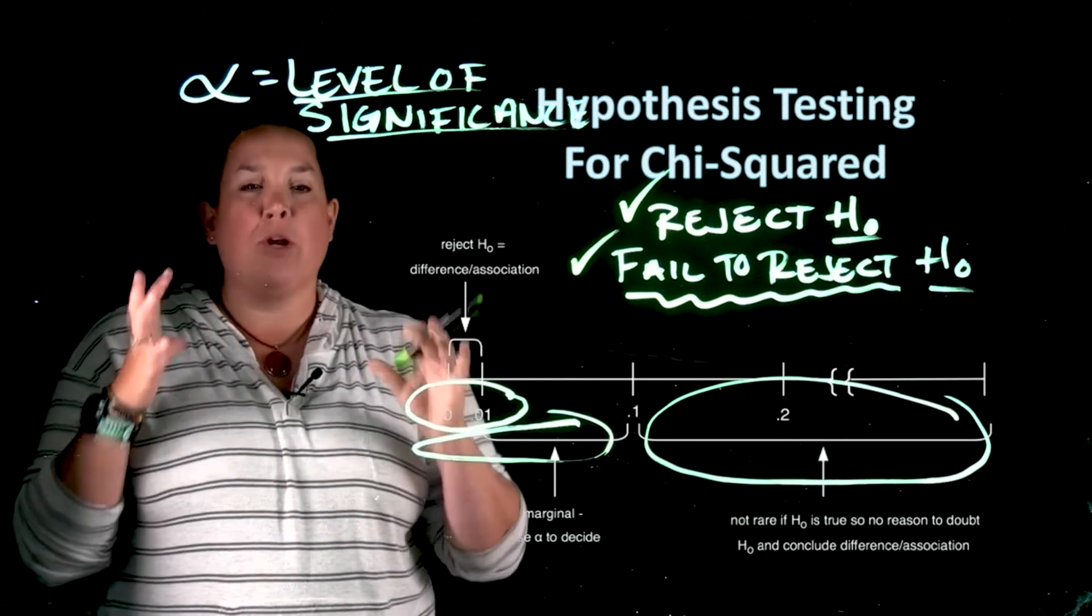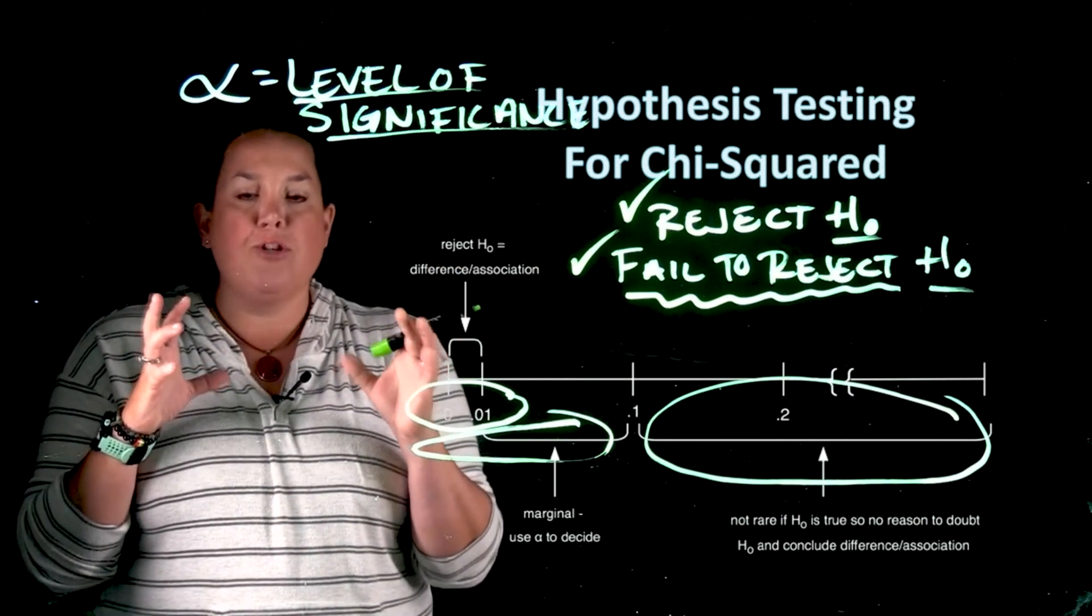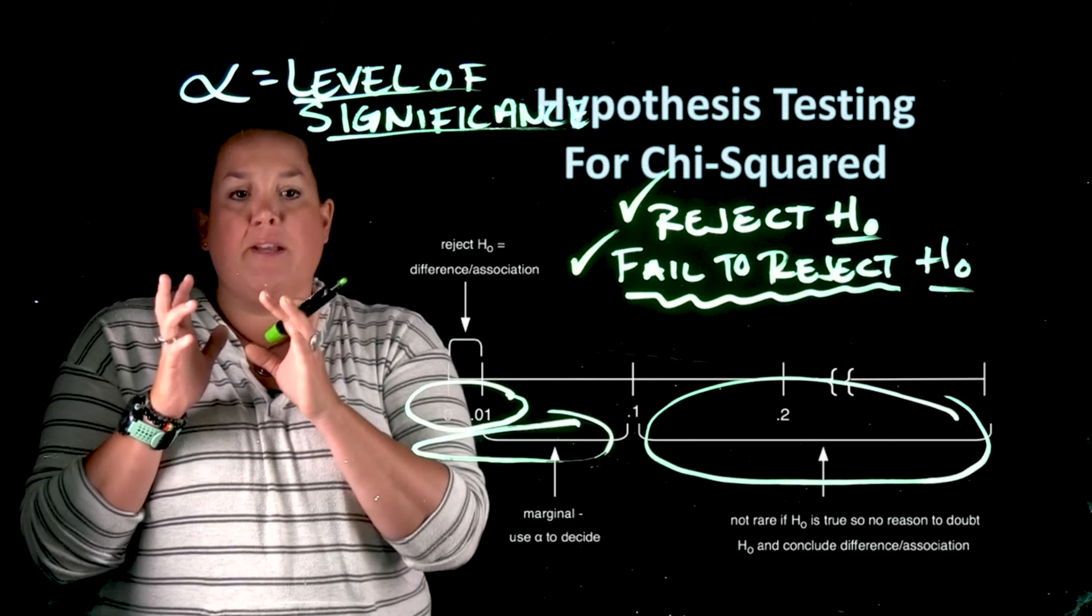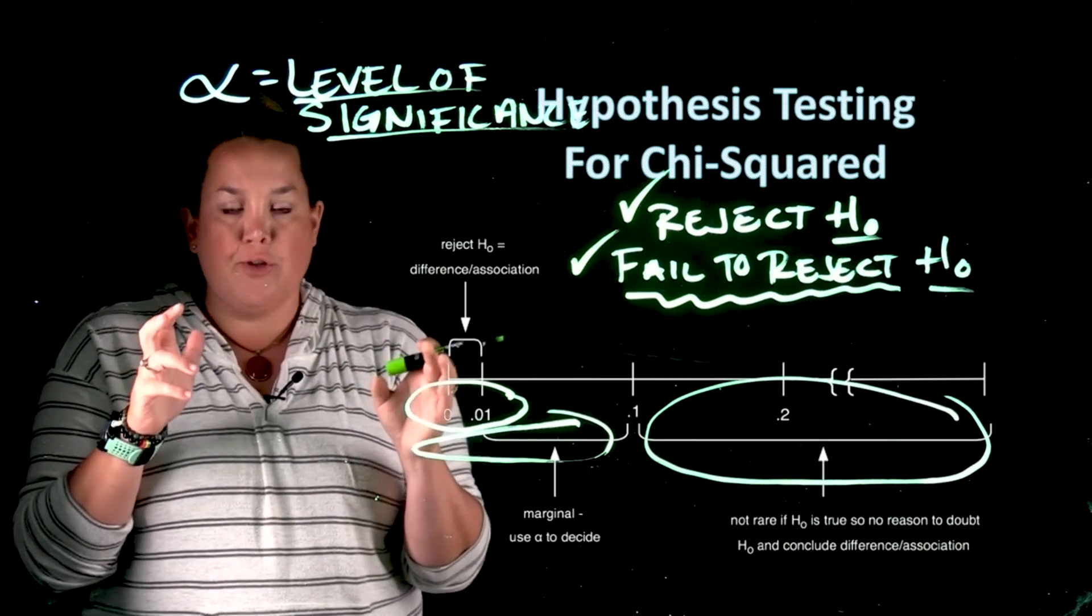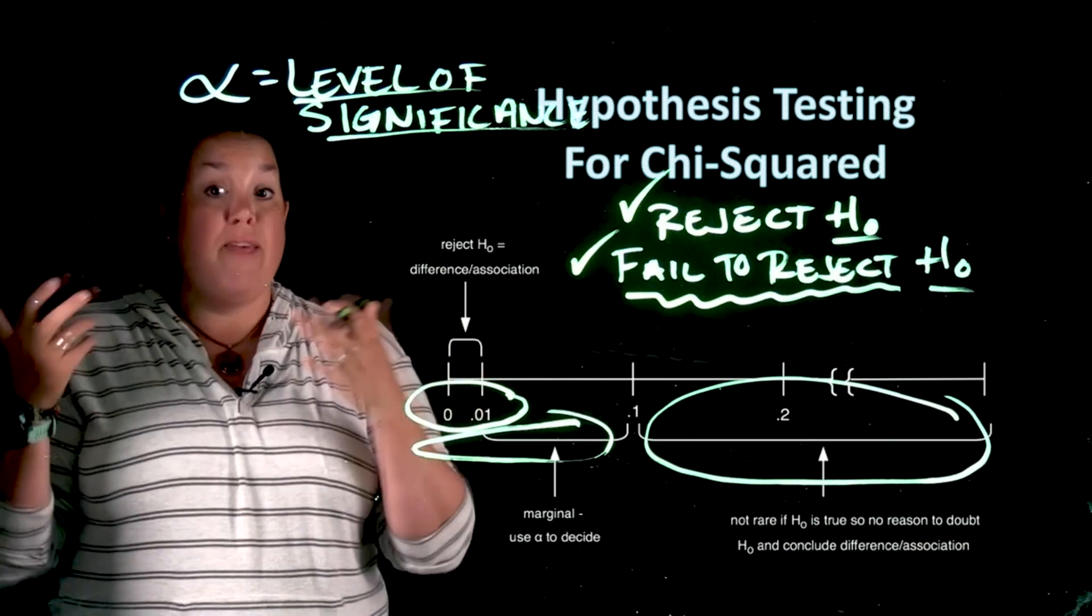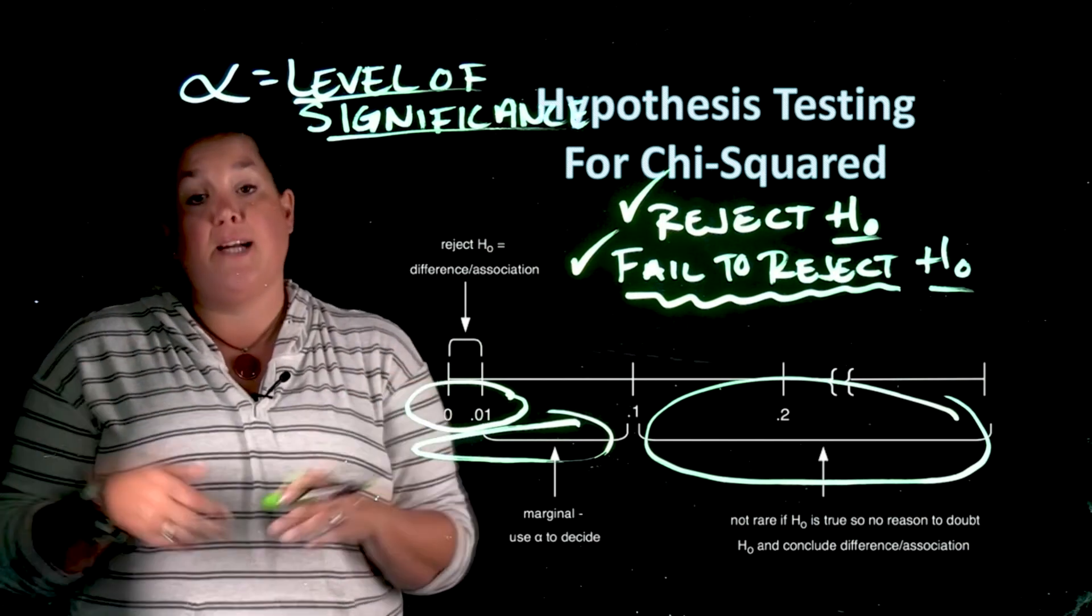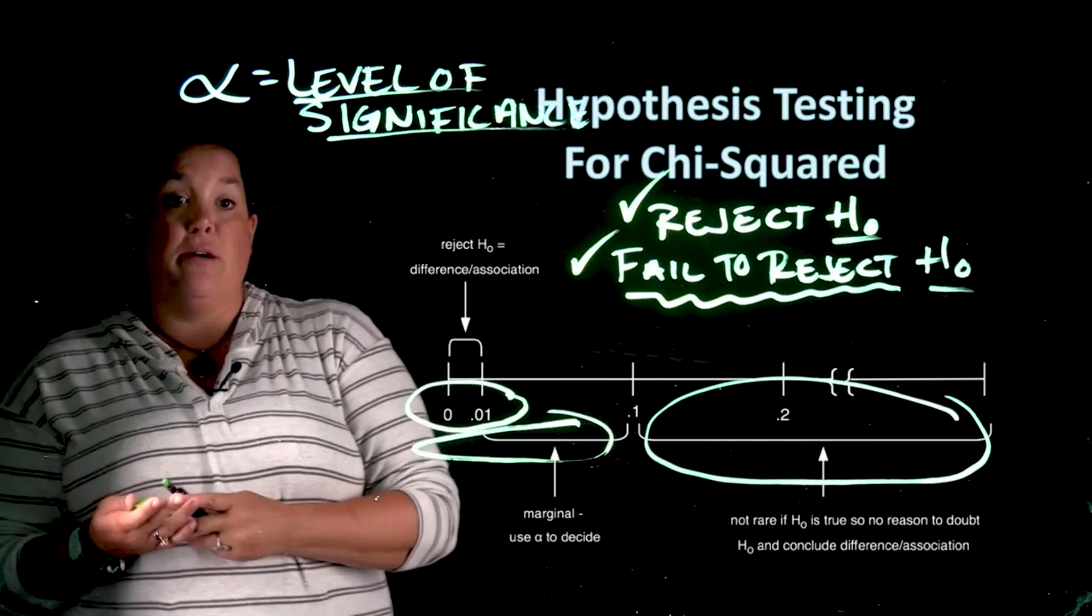And in future videos I'm going to really emphasize how to look at a p-value and make the decision to reject or fail to reject. But for right now that's what it is and that's the decision and that's the last portion of executing calculations for a chi-squared.